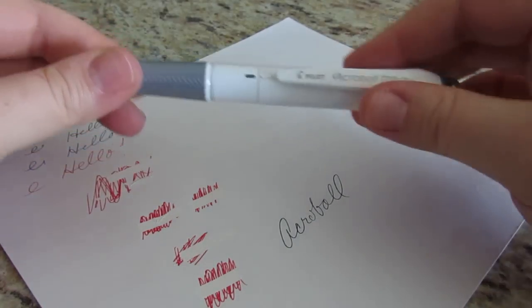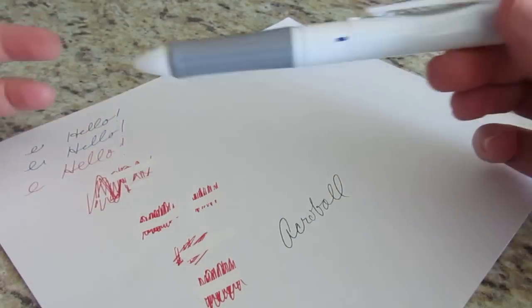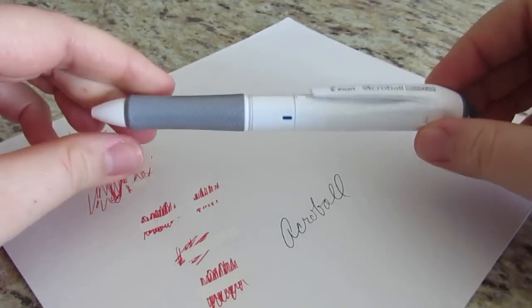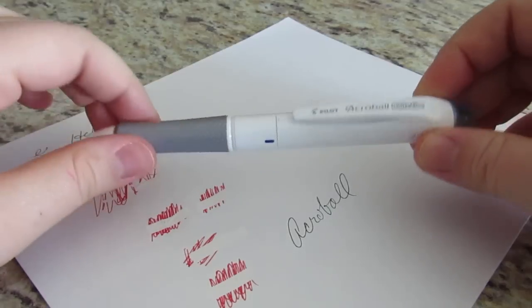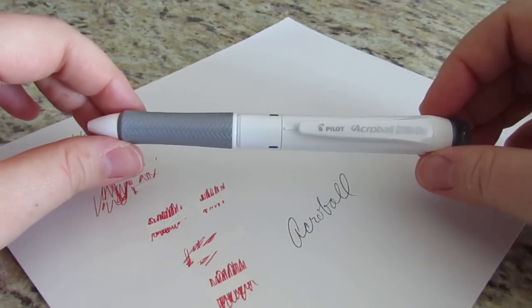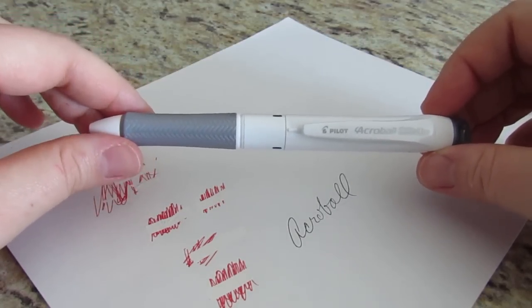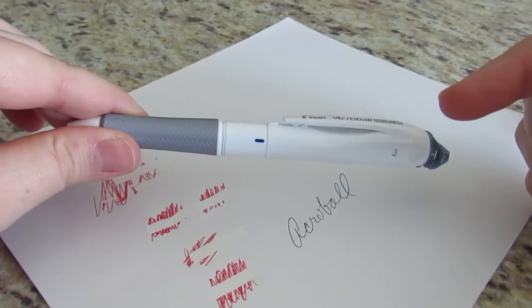So yeah, if you're interested in a multi-pen that has the correction tape on it, this is a great choice. Again, I got mine on Amazon, but they did have them on JetPens. They were sold out when I went to look and they had several different colors, but they were on Amazon. So if you're interested, check them out. If you have any questions about it, leave it in the comments below.